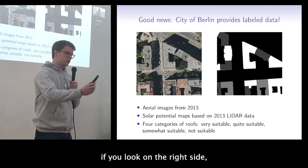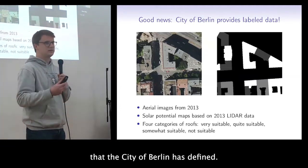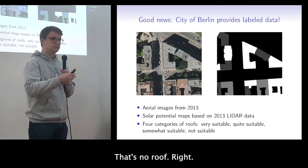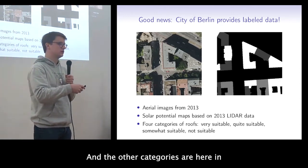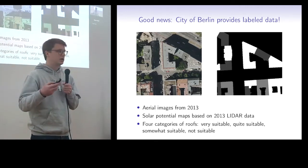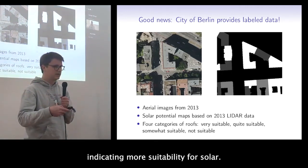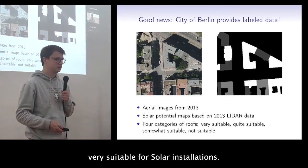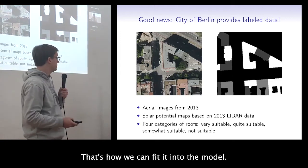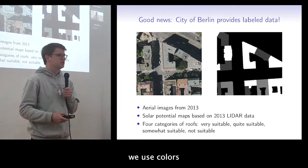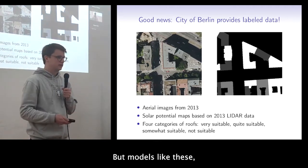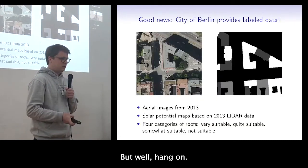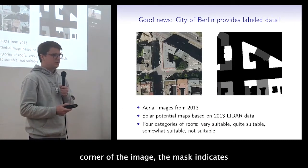The labeled data represents four categories defined by the city of Berlin. Background is black — that means no roof. The other categories are shown in grayscale, with lighter colors indicating more suitability for solar, so white patches are very suitable for solar installation. That's how we feed it into a model — later in the presentation we use colors because it looks nicer, but the models use these grayscale images.